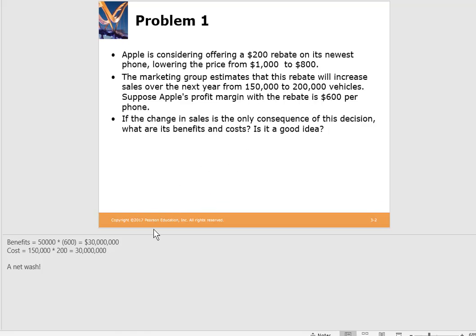The benefit is an extra 50,000 units sold, and the profit margin with the rebate is $600 per unit, so we increase benefits by $30 million. However, the cost is that for the existing 150,000 units we lose $200 per unit — the $200 rebate — so the net cost is also $30 million. In this situation the $200 rebate creates a net wash: no benefit to the company.